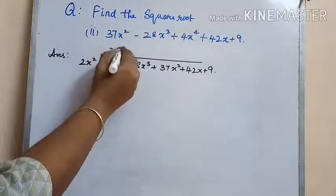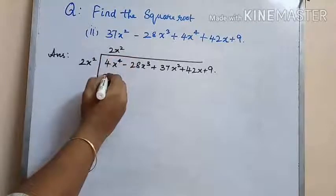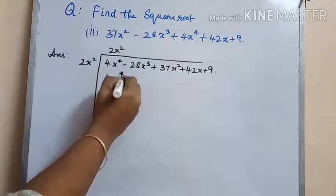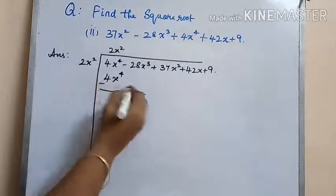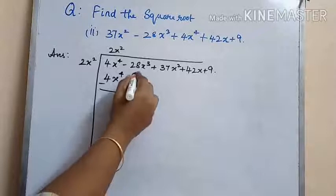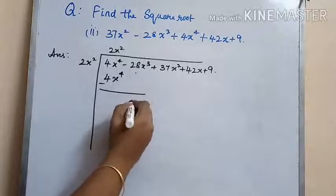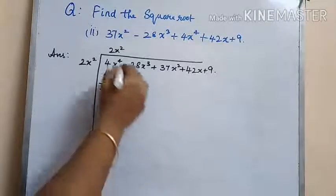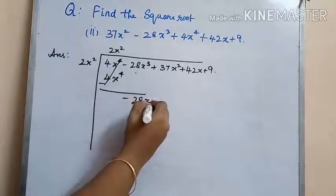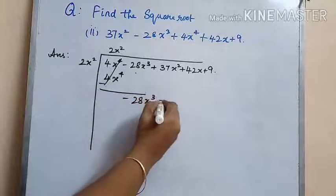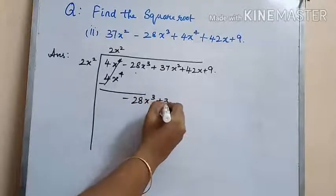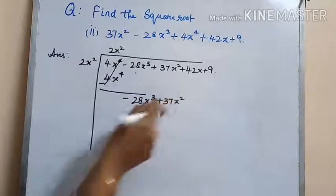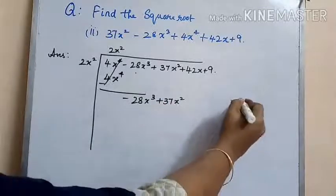The square root of 4x to the power of 4 is 2x squared. That should be written in the quotient part and on the left-hand side. Multiplying and subtracting we get 0. In the next step we bring down minus 28x cubed plus 37x squared.